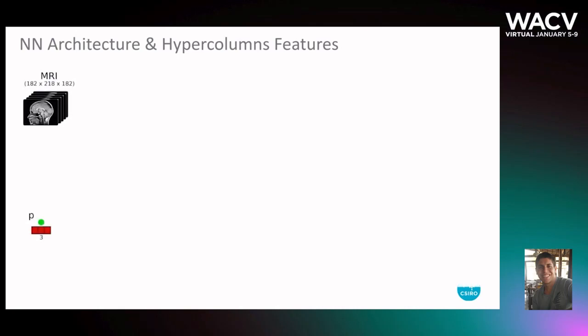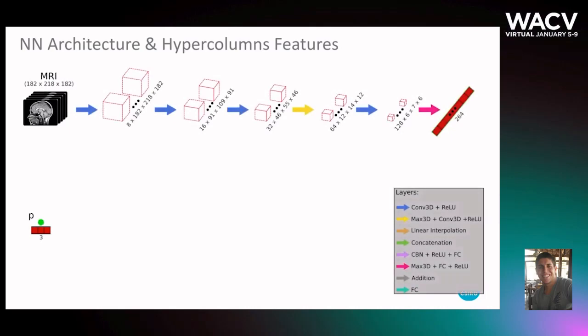For MRI represented as a grid of voxels and a point represented by its real coordinates, we first compute feature maps by applying 3D convolutions to the input MRI.